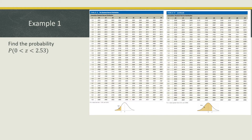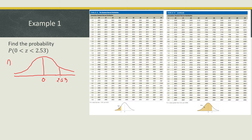First, we need to draw a standard normal distribution curve. Between zero and two point fifty three — since this is positive — we need to find the probability here, meaning the area between those two values. This falls under case number three, where we subtract the area of Z1 from Z2, or the greater probability minus the lesser one.